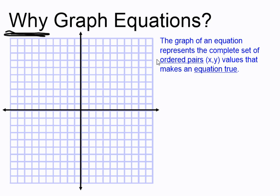A graph is actually a visual way to represent all the ordered pairs, all the x-values and y-values, which make the equation true. So this is the graph of the equation y equals 2x, and it represents all of the possible values for which that is true.